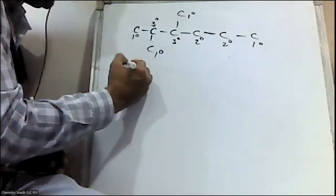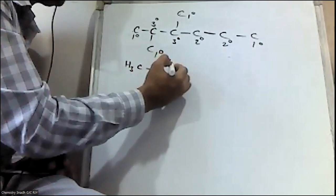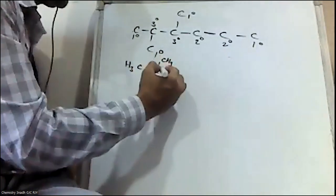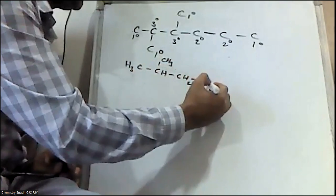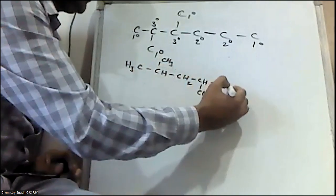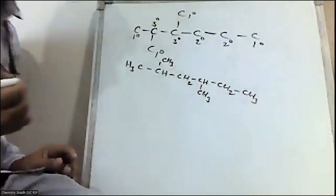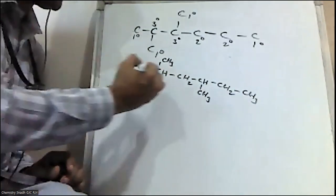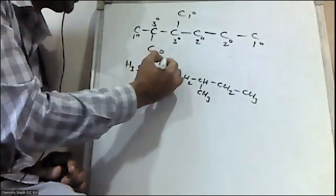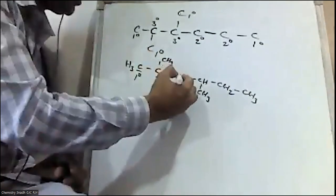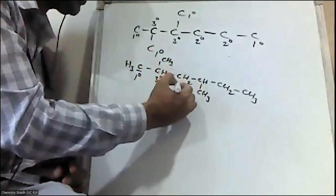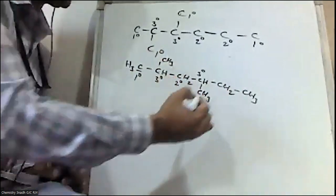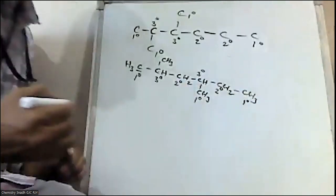Let me take one more example with a bigger compound. This carbon is attached to only one carbon — primary carbon. This one is attached to one, two, three — tertiary carbon. This one is attached to two other carbons — secondary carbon. This is tertiary, this is primary, this is secondary, and this is primary.